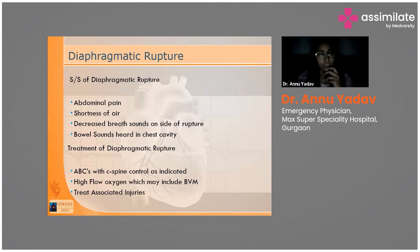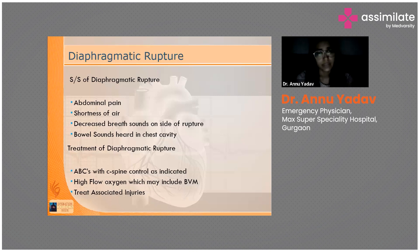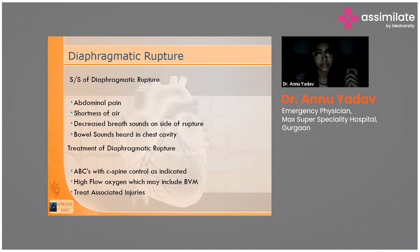The signs and symptoms include abdominal pain due to the diaphragm rupture. Since the diaphragm is a major muscle for breathing, there will be shortness of breath and decreased breath sounds on the side of the rupture, mainly the left side since the right is protected by the liver. Because the stomach and abdominal contents are displaced into the left chest, bowel sounds can actually be heard in the chest cavity.